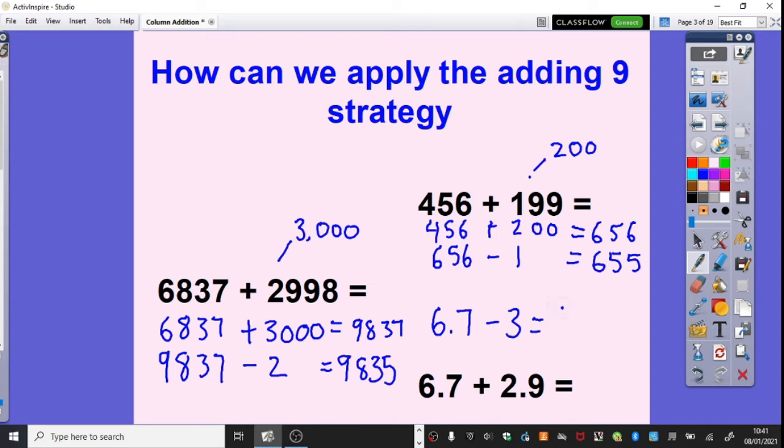sorry, add 3 even, equals 9.7. And then we have 9.7 and we've added on 0.1 too much, 1 tenth too much. So we get 9.6. So the answer is 9.6 for this one.